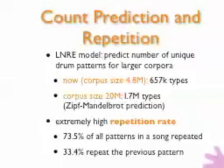Another very characteristic thing about drum patterns in particular is the repetition rate, which is extremely high. To illustrate: the proportion of drum patterns that are repeated within a song is almost three quarters — 73.5% of all patterns in a song are not unique and are repeated somewhere else. Even looking only at successive patterns, the repetition rate is still 33.4%, meaning the likelihood that a bar has exactly the same drum pattern as the previous bar is approximately one third. This is quite different from word patterns.